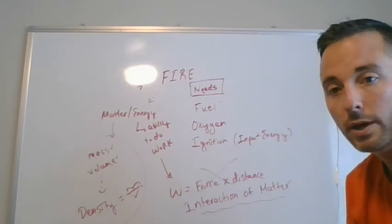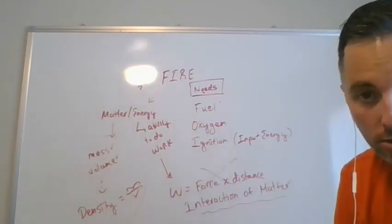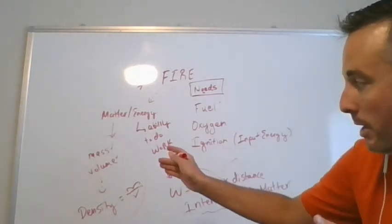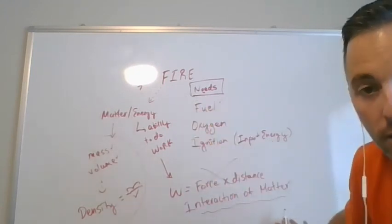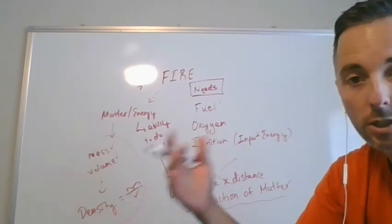So our takeaway to sum all this up in one spot, fire has three needs. That's fuel, oxygen, and ignition, as we've defined it. Matter has mass and volume. Therefore, it has density. Energy is the interaction of matter. The entirety of the known universe is made up of a matter-energy interaction.